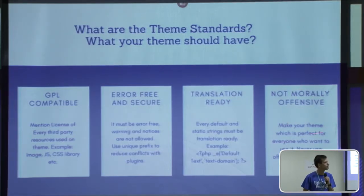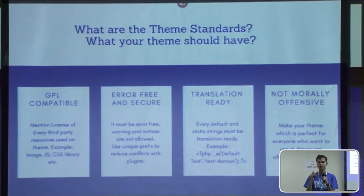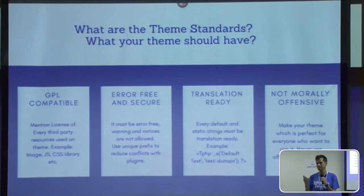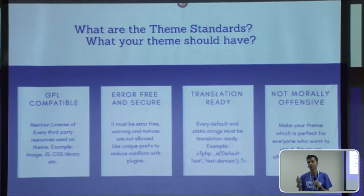No offensive content — make your theme perfect for everyone who wants to use it. Never use offensive images or resources, because you are not allowed to use images that may not be suitable for all societies. Your theme must be pleasant and suitable for everyone, because WordPress.org is totally free and everyone can visit and download themes. We never approve offensive themes, and if any author does those things, we totally ban or suspend those themes.